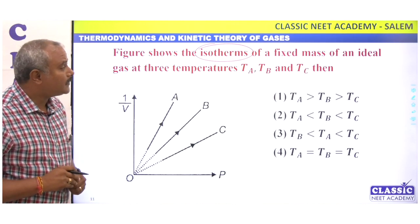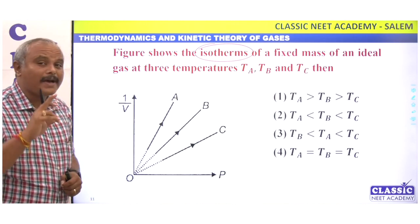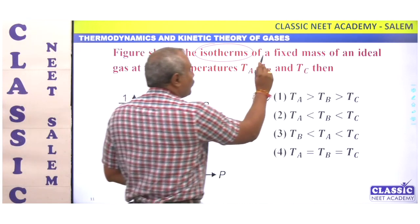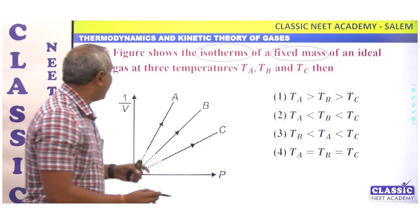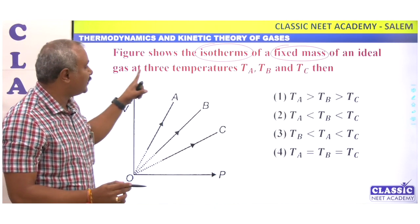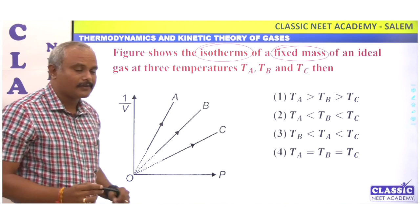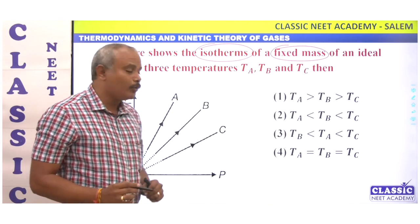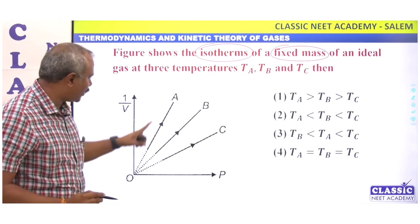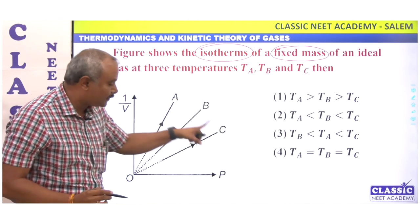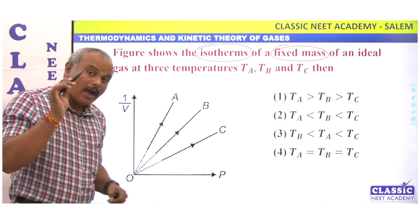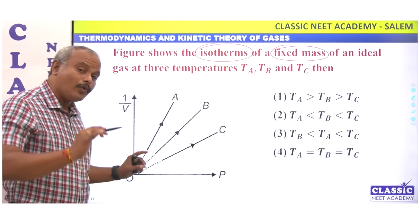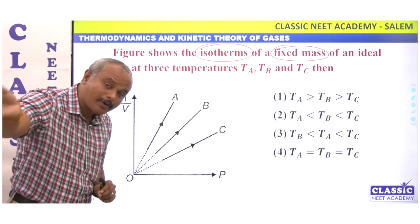Of a fixed mass — mass is constant — of an ideal gas at three temperatures: Ta, Tb, and Tc. Three temperatures A, B, C. An isotherm is a full curve; if you draw one isotherm, two, the temperature along the complete isotherm will be constant.